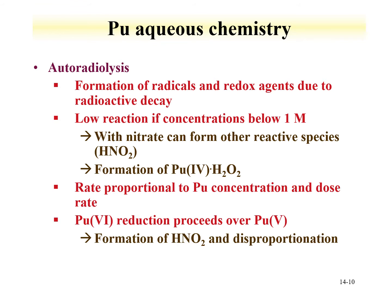One thing we also see is autoradiolysis, where the fact that plutonium is radioactive means it forms radicals and redox agents due to radioactive decay. These reactions tend to be low if concentrations are below one molar. In a nitrate medium, you can form nitrous acid. You can also form peroxide species, as discussed with other actinides. The autoradiolysis — this change in redox — is proportional to plutonium concentration and dose rate, which also relates to the half-life of the plutonium isotope in solution.